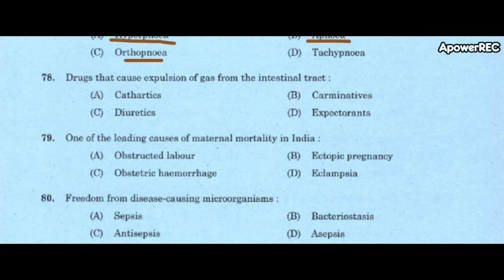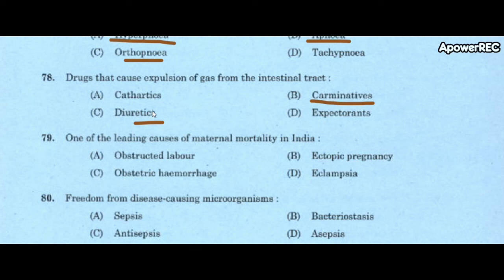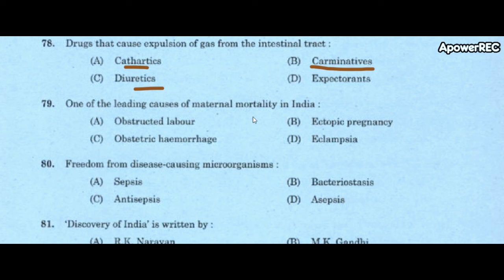Next question: drug that causes expulsion of gas from the intestinal tract is A) cathartics, B) carminatives, C) diuretics, D) expectorants. Correct answer is carminatives. Diuretics increase the production of urine — example: Lasix. Cathartics soften stool and are used for constipation.